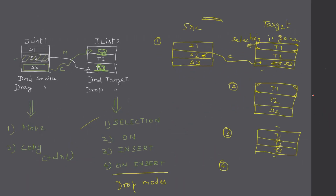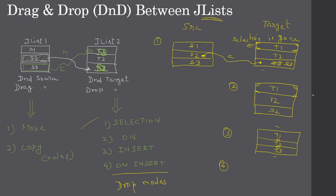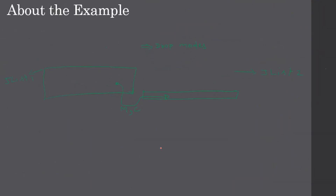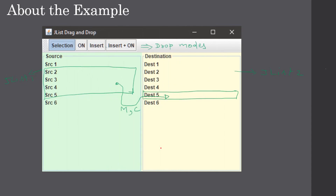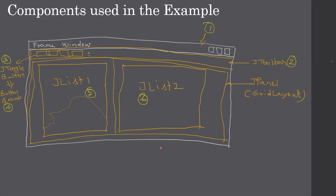These are all the videos we covered in the previous parts. First we learned about drag-and-drop basics between two JLists, then we learned about move and copy bound to the source. Then we talked about the drop targets — there are four targets. Next we learned about the example and how it behaves, and we also talked about the components involved in the example.